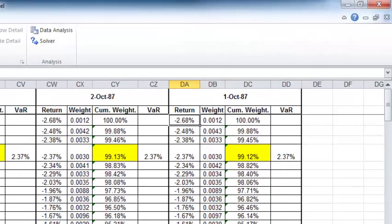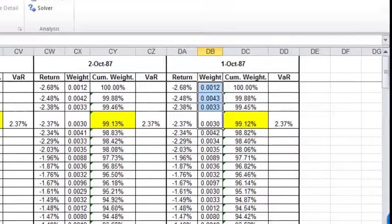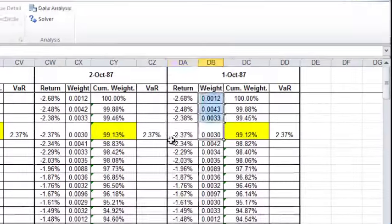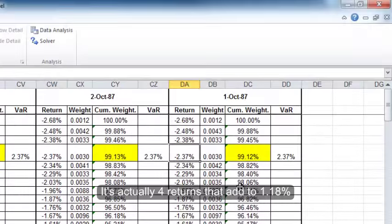Here I have the lowest return. The cumulative weights start at 100%, then go down until before I breach 99%, that is my value at risk number. Another way: if you add all these weights up, they add to 1.18 here. The sum of the three weights is more than 1%, so the value at risk for weighted historical simulation is minus 2.37.